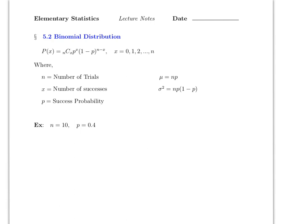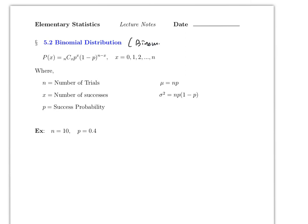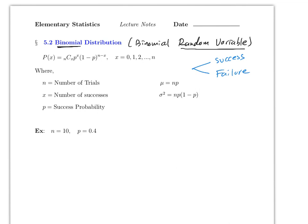This video covers section 5.2, the binomial distribution. Recall that a random variable and distribution are pretty much the same thing. In this section we focus on a very specific distribution called the binomial. 'Bi' means two, so here you can only have two outcomes: the first is considered a success, the second is a failure. It doesn't necessarily mean you only have two choices.